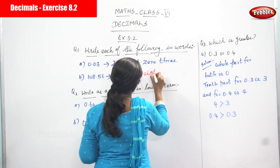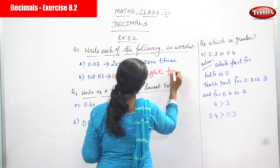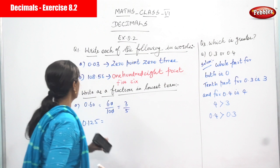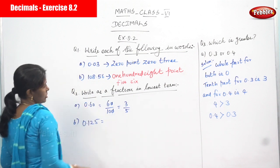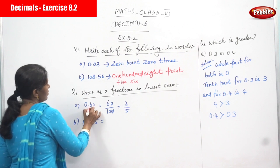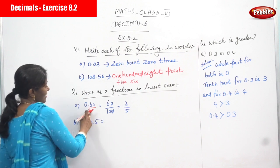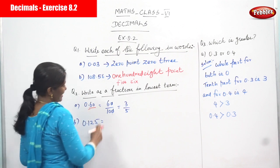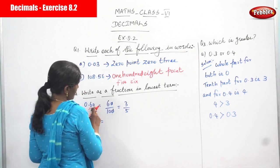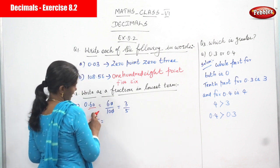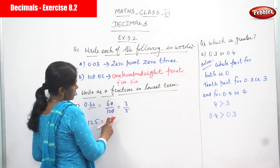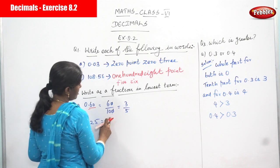Second question: write as a fraction in lowest terms — 0.60. After the point you have to consider 60. After the point, how many digits? Two digits. That is why you divide by 100, because 100 has two zeros. So 60 divided by 100.